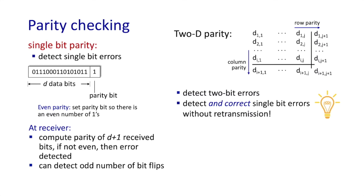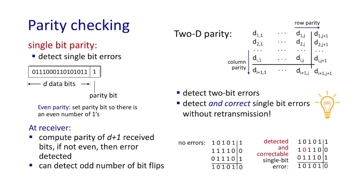Let's take a look at an example of two-dimensional parity. Here's a case with our d bits again arranged into a grid. For the first row, we now compute the row parity bit to be 1. For the second row, the parity bit is 0. For the third row, the parity bit's 1. And we can compute column parity bits as well. Now let's suppose a bit's flipped in transmission as in this example here.